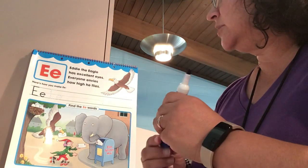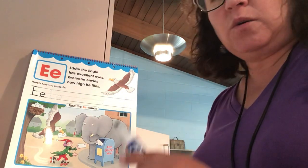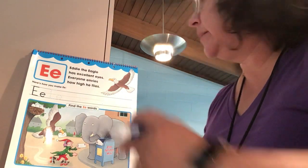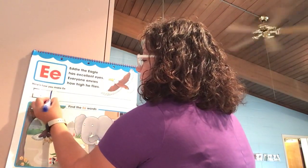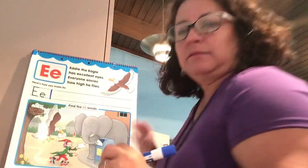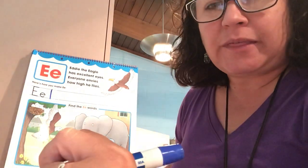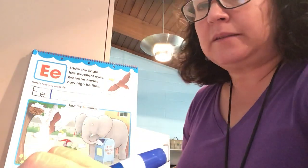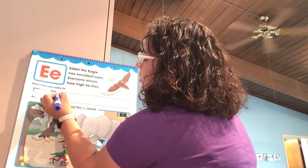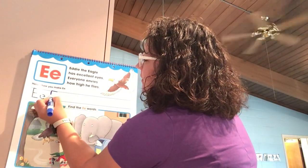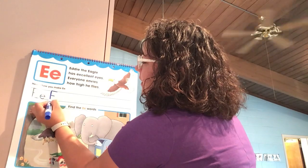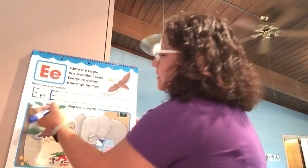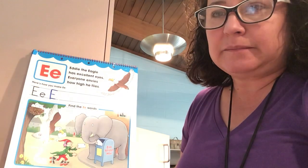Remember, whenever we start our letters, we always start at the top. So we're going to go ahead and make a straight line down. We did that with the F. Then we're just going to make a short line across, and then another one in the middle, and then another one at the end to make uppercase E.